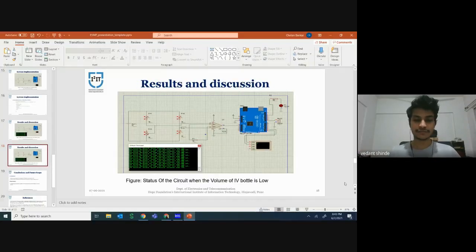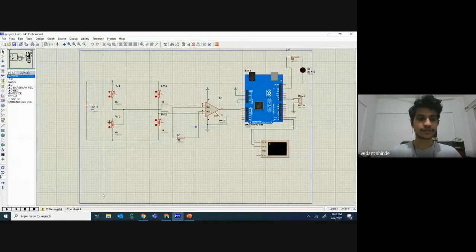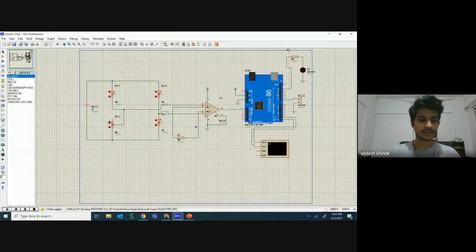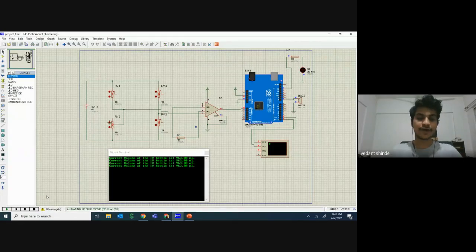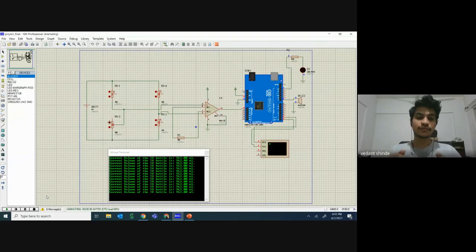Now we'll move to the device demonstration. Now we are in the Proteus design software and I'll start the simulation. Now, as you can see, the current value of IV bottle is 963 ml. Now, we'll decrease this value by decreasing the value of potentiometer RV3.